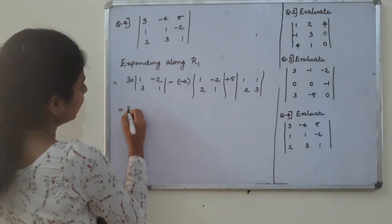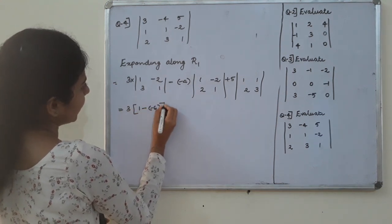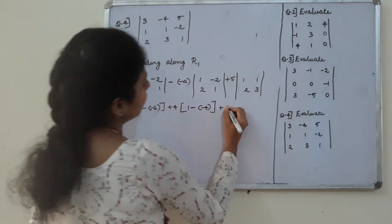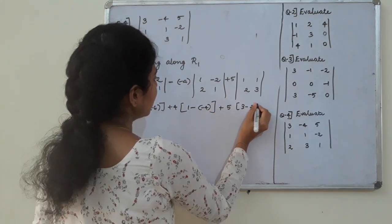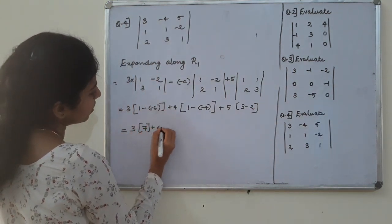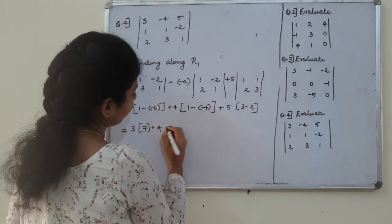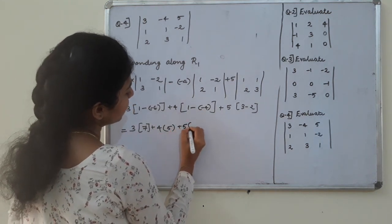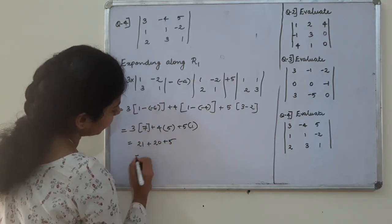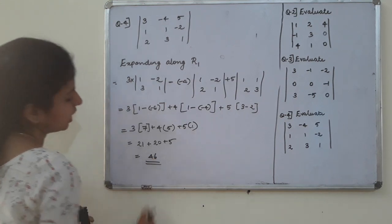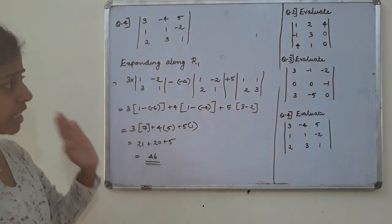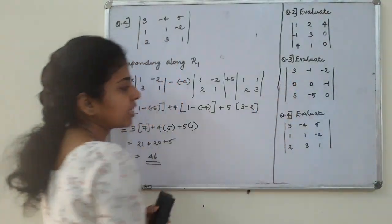That is equal to 3 into (1 minus of minus 6) plus 4. Then 1 minus of minus 4, plus 5 into (3 minus 2). This equals 3 into 7, plus 4 into 1, which is 1 plus 4 equals 5. Plus 5 into 1: 21 plus 4, so 5 is equal to 20 plus 5, that is 46. Answer is equal to 46.